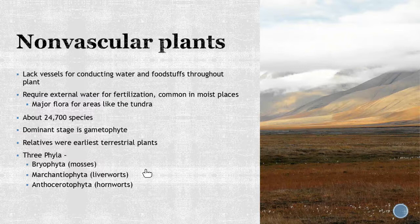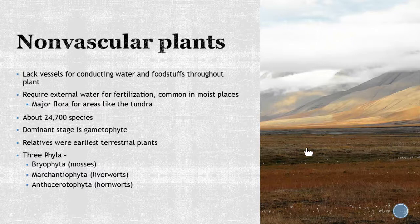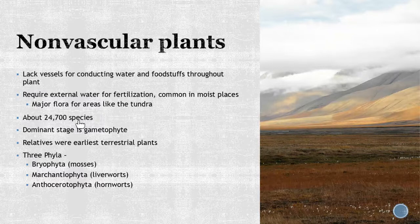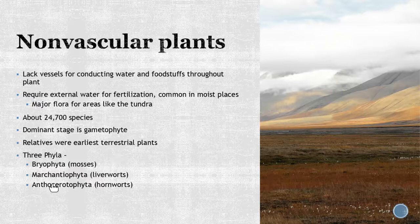You're going to see these in certain areas. They're going to be the major flora for areas like the tundra — very cold areas. Moss is a key thing here, and it provides a key food source for animals that thrive in this area. There are about 25,000 species, and the dominant stage is the gametophyte. These are the very earliest of the terrestrial plants, and they will be broken down into three phyla, which we'll go over briefly.